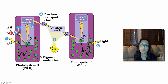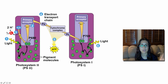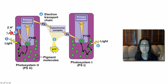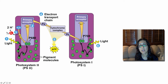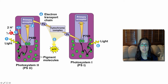Step six: a photon strikes a pigment within the light-harvesting complex of photosystem I — the same thing happens: electrons are excited and energy is passed along until it gets to the two chlorophyll A molecules in the reaction center complex. These are called P700, and they also donate their electrons to a primary electron acceptor. When they donate their electrons, that creates an electron hole, and the electrons that came from photosystem II down the first electron transport chain are the ones that replace the electrons that were lost and fill that electron hole.